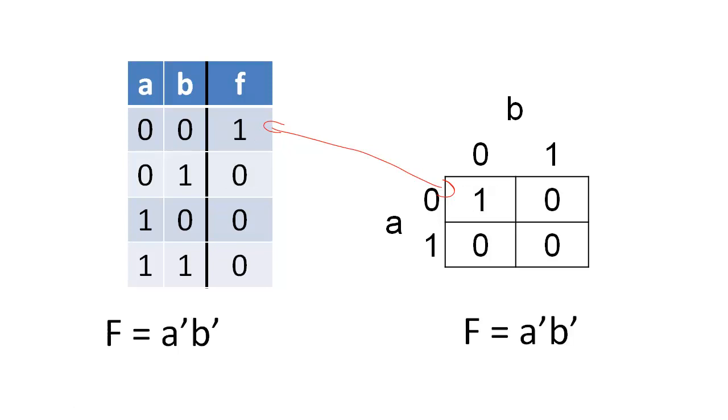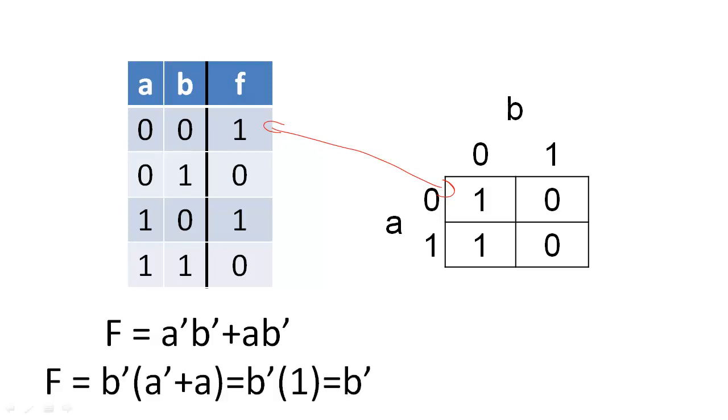The advantage of the K-map for optimization is that it creates a visual representation of some of the Boolean identities. For example, if we had a more complex function, we might translate the rows with 1s into a Boolean expression. We could then use a series of distribution, complementarity, and identities to describe the minimal solution.